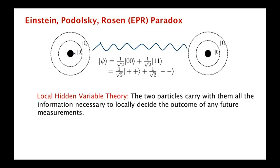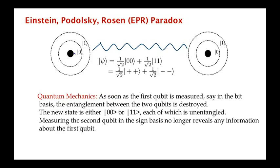And what they believed was that, in fact, the way out of all this was that the two particles carry with them all the information necessary to locally decide the outcome of any future measurements. In other words, possibly, they believed that this uncertainty principle was actually incorrect. And Einstein spent the rest of his life really looking for this hidden variable theory, a local hidden variable theory for quantum mechanics.